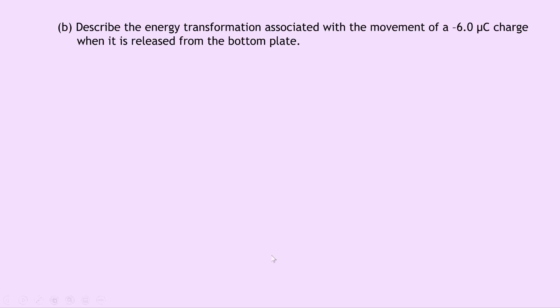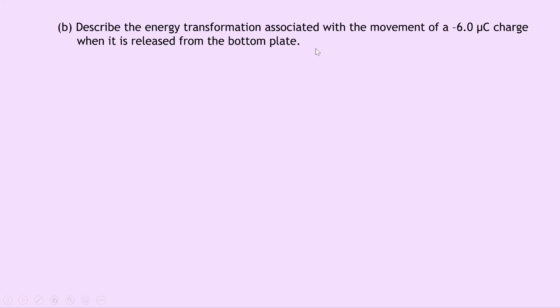Part B says to describe the energy transformation associated with the movement of a minus 6 microcoulomb charge when it is released from the bottom plate. Well if we look back at our diagram, essentially this bottom plate is our negative plate because it's at 0 volts, and the top plate is positively charged.